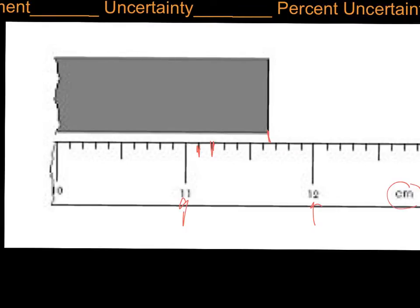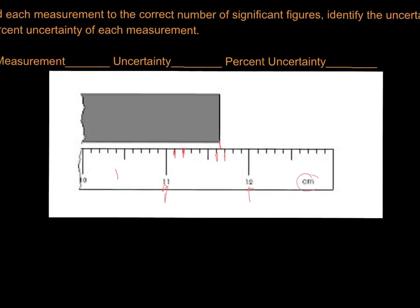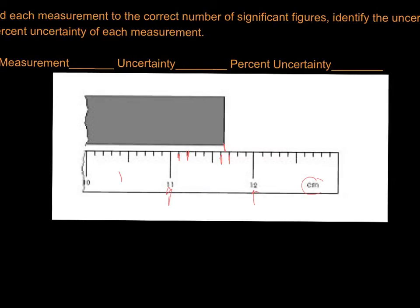In this case, I would record this since it's between 11.6 and 11.7. The last digit is an estimate. I'm going to estimate that that is 11.63 centimeters. The uncertainty is always plus or minus one unit in the estimated place, so plus or minus one one-hundredth. And then the percent is your uncertainty divided by the measurement. So we are 0.86% uncertain. Or we're approximately 99% certain in our measurement.